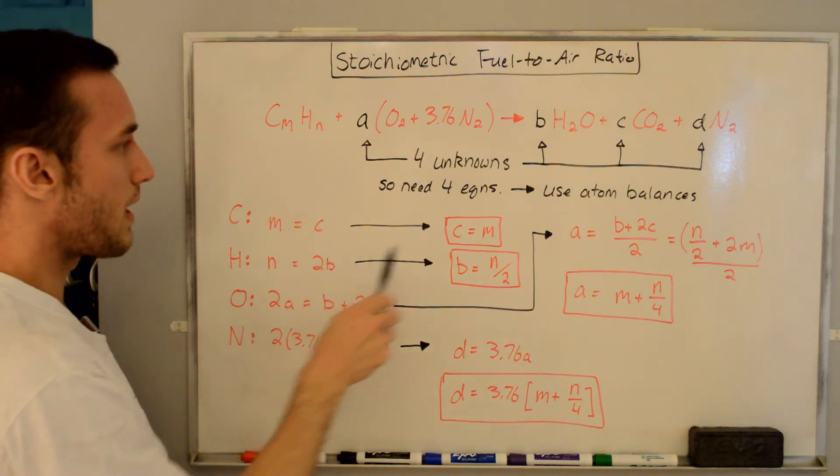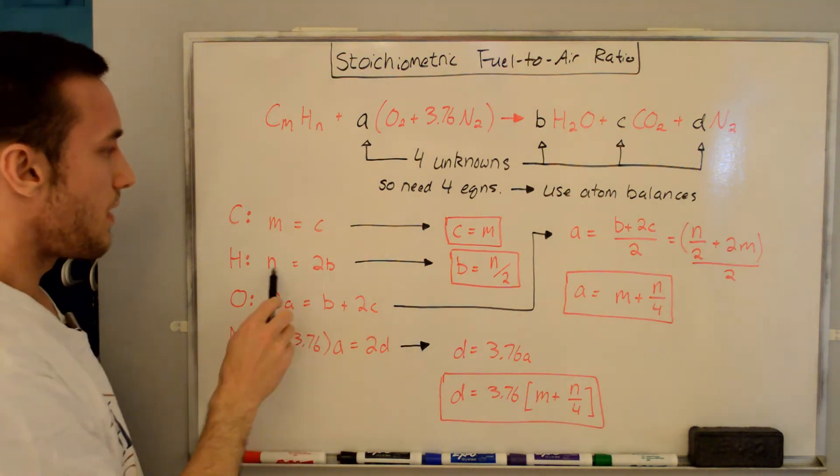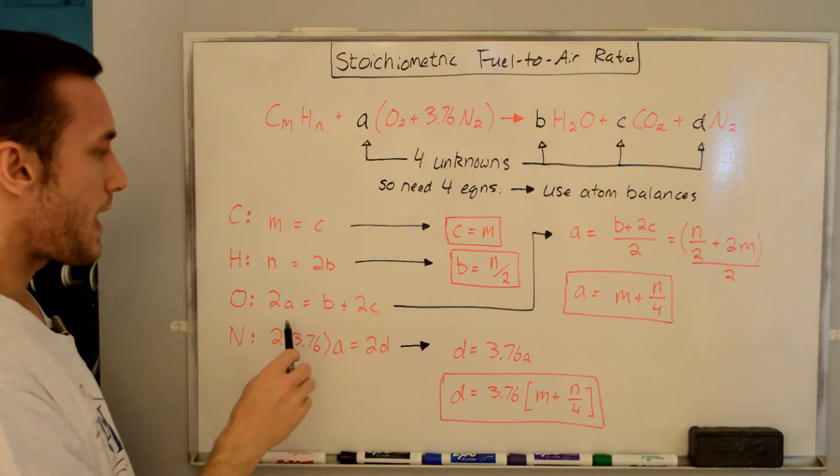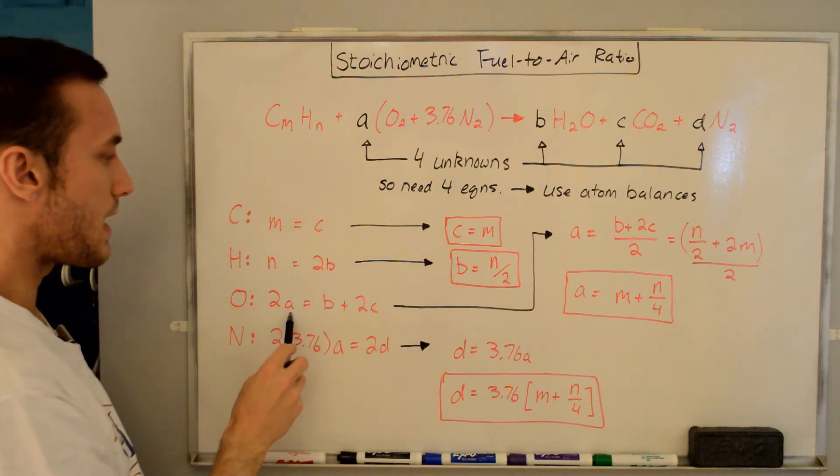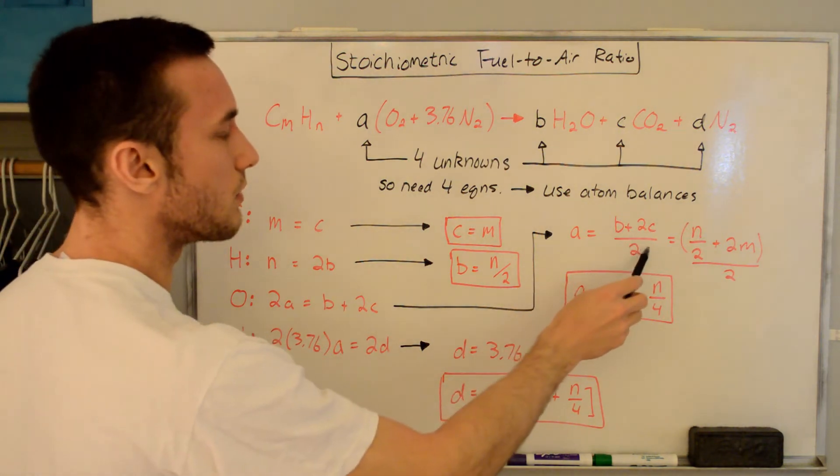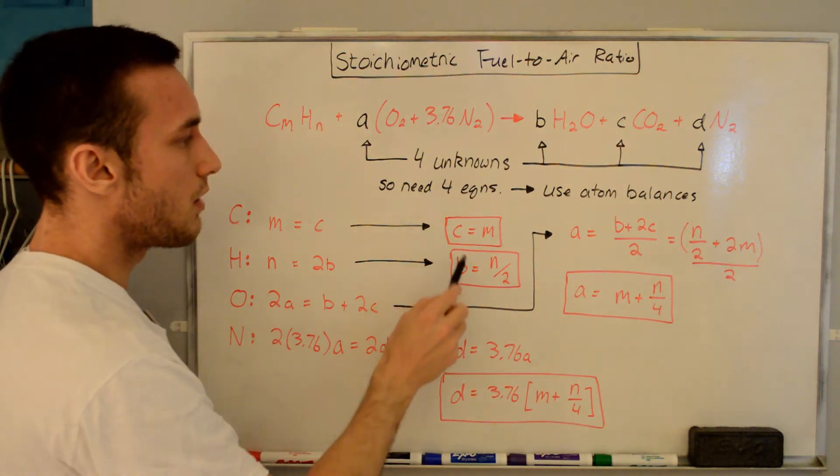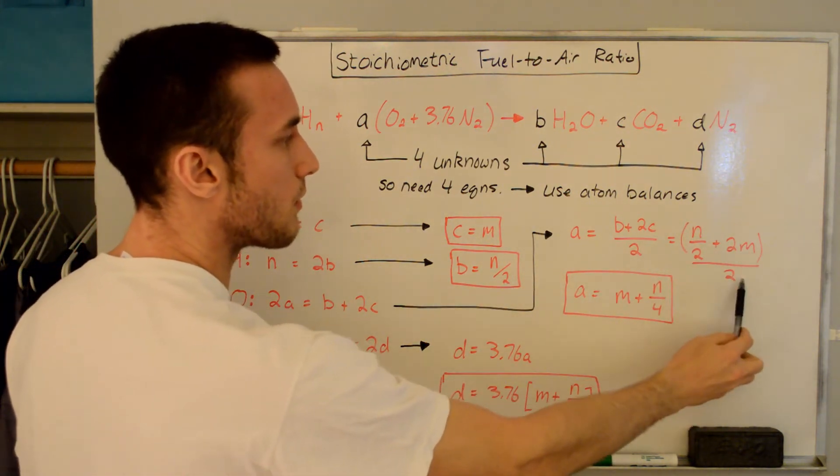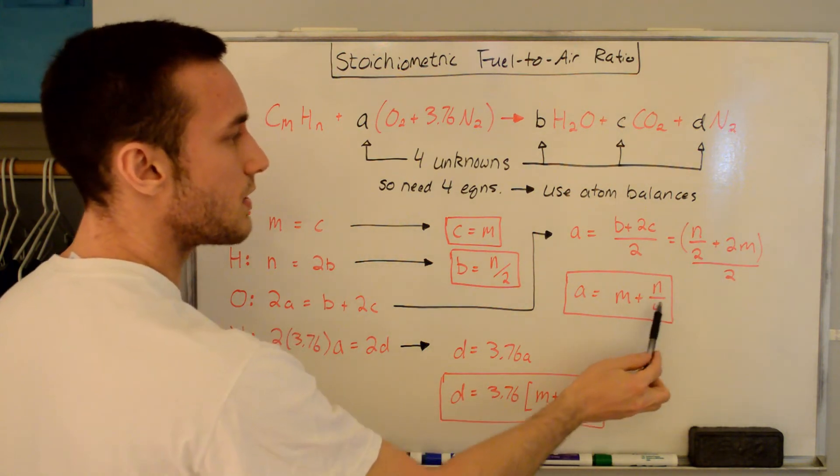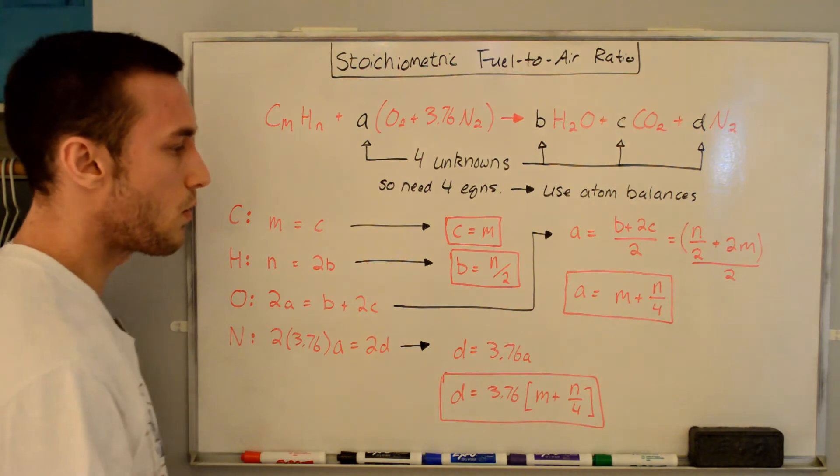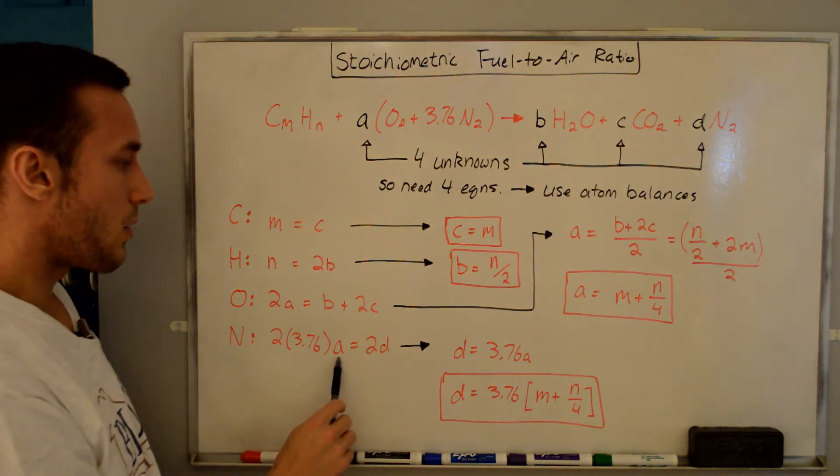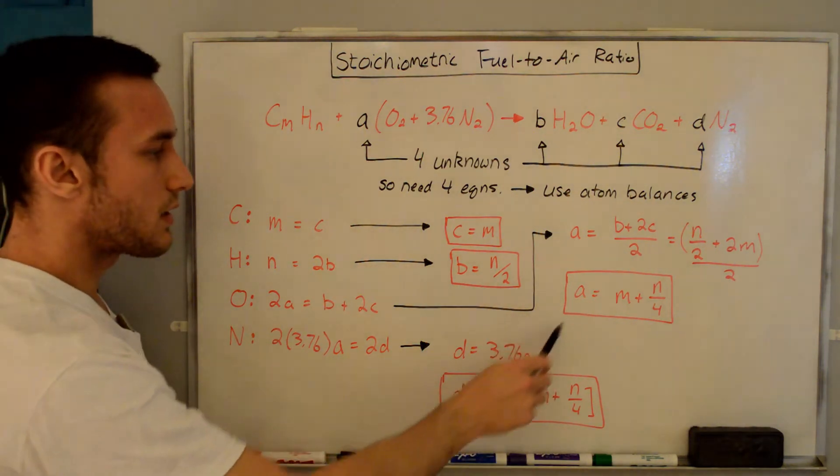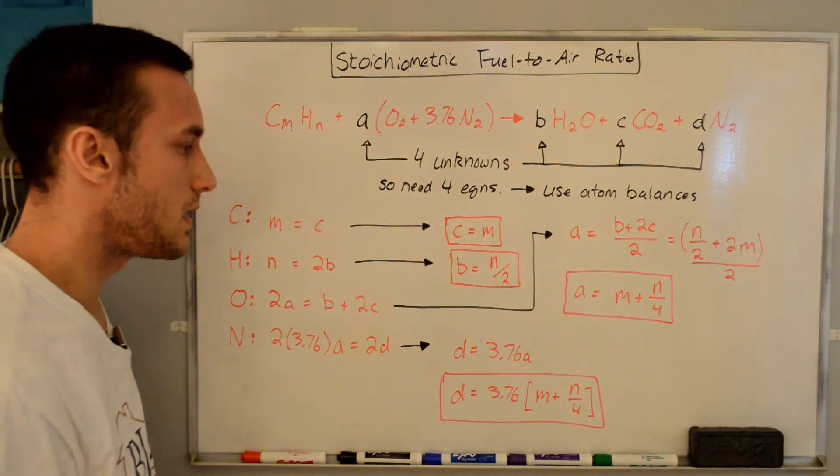We can see that this one, if we just flip it around, we have C is equal to M. And this one, we just divide both sides by 2, and we get B is equal to N over 2. This one here, we're trying to solve for A because we already know C and B. So we divide both sides by 2. So we get B plus 2C over 2. We know values of B and C already. So we plug these in for B and C here. We get this expression here. I'm just going to flip the terms around. So we have 2M over 2 is equal to M. And N over 2 divided by 2 is N over 4. So A is equal to M plus N over 4. And finally, we can solve for D because we now know A. So the 2s cancel out here. So we just have 3.76A is equal to D. We just plug this value in for A here, and we get our final expression for D down here.